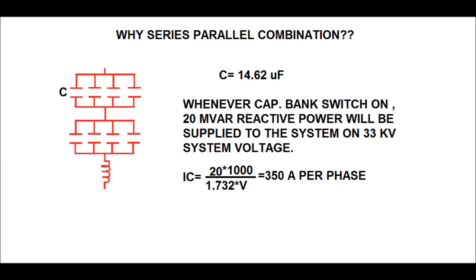The capacitor bank injects leading reactive power to improve the power factor of the system. The capacitive current injected per phase is IC = 20,000 / (√3 × 33 kV) = 350 ampere per phase. That is, whenever the capacitor bank is switched on, each phase carries a capacitive current of 350 ampere.